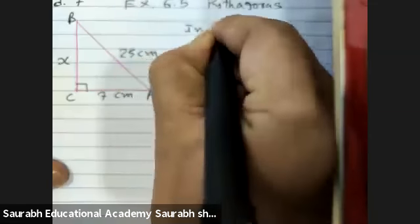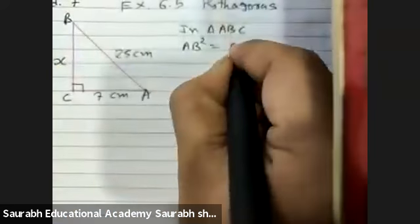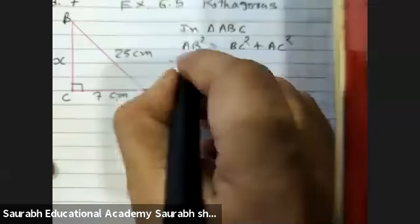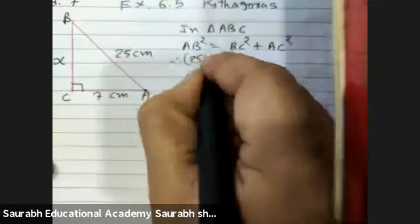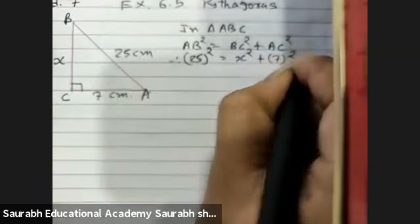In triangle ABC, AB square equals hypotenuse square equals BC square plus AC square. That is 25 square equals X square plus 7 square.